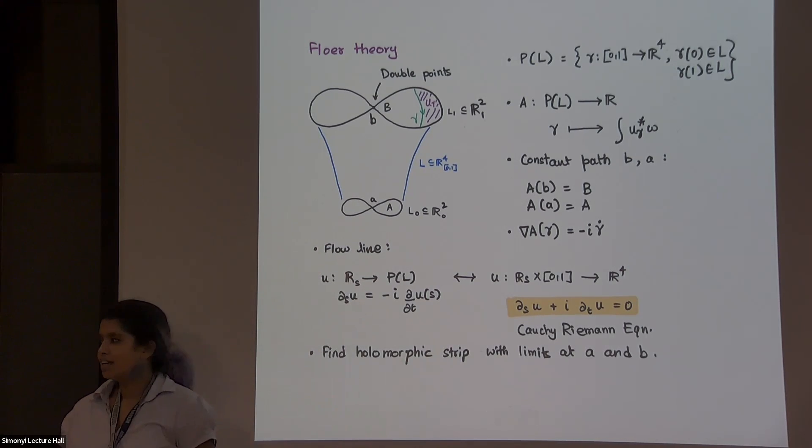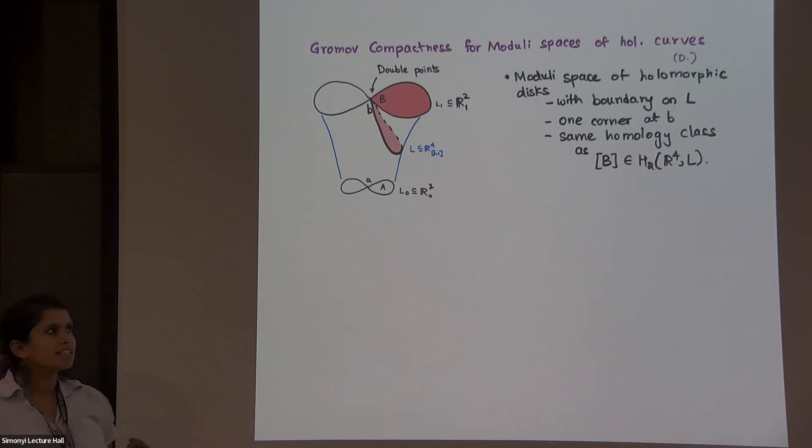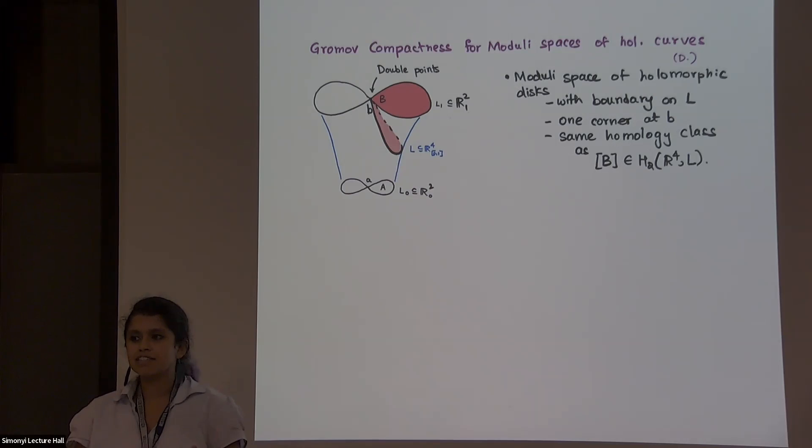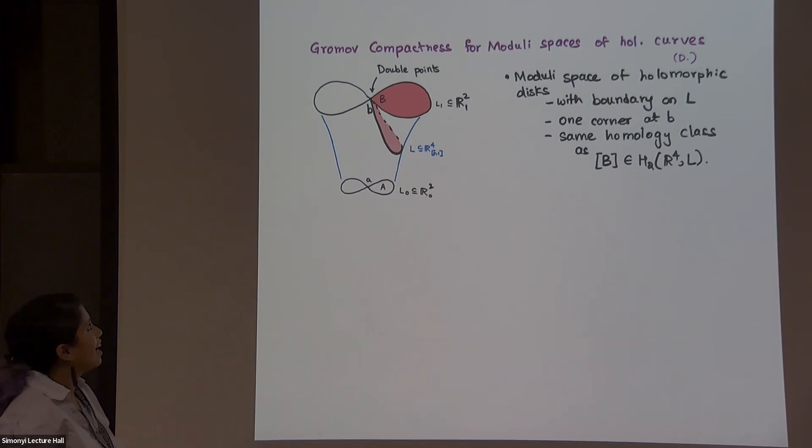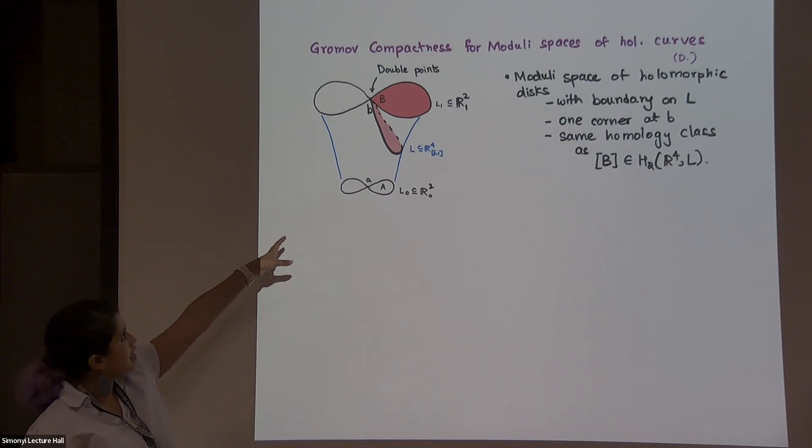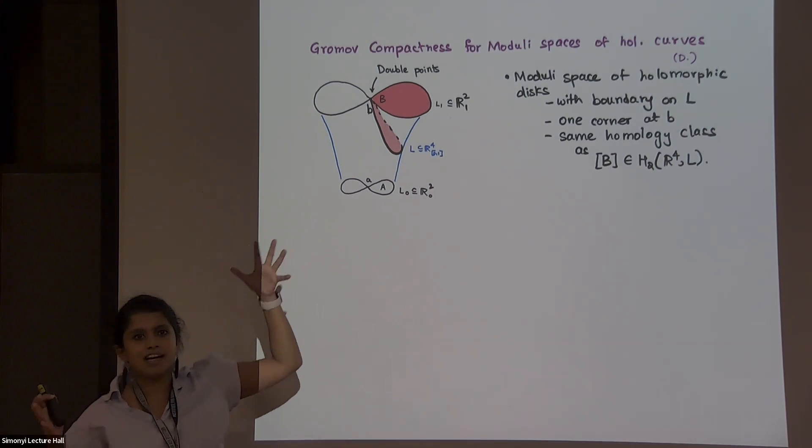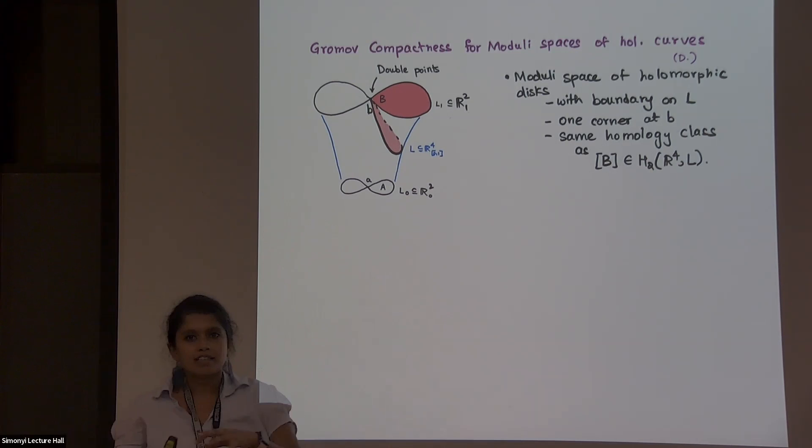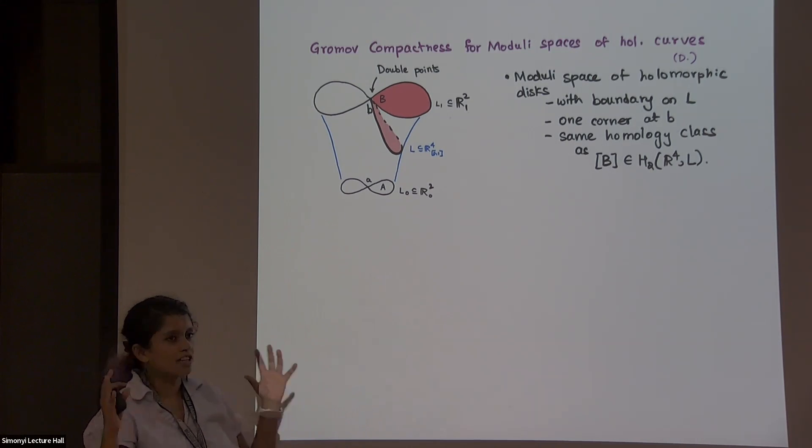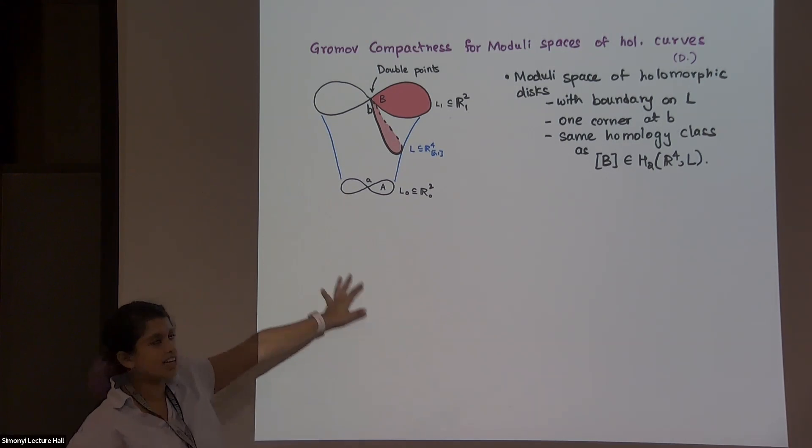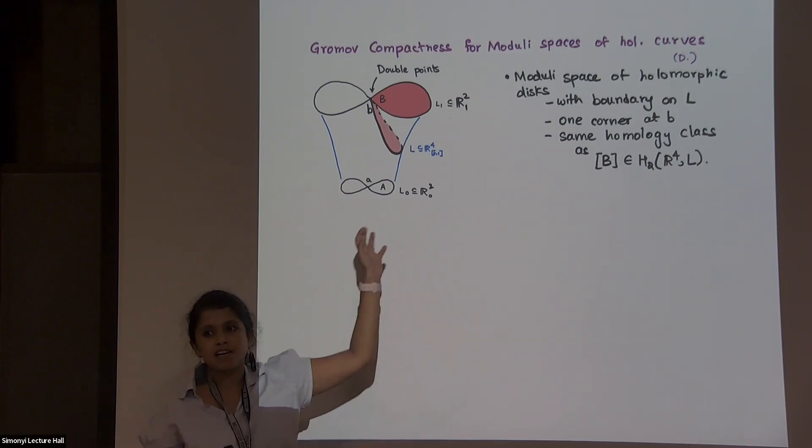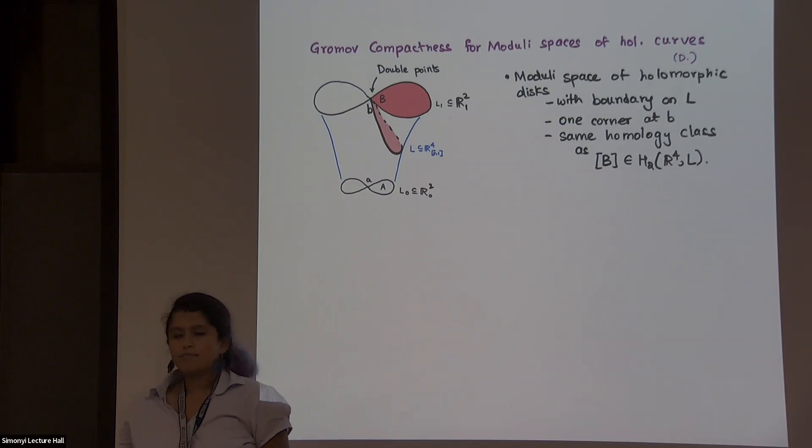And then comes in work of other people. So I guess at the same time that Floer was doing this stuff, Gromov was doing some compactness for holomorphic curves. And you can try adapting those theorems into your conditions, put all your boundary conditions. So that's what I did. Suppose this is the Lagrangian, and there's that pink B that I care about. I'm gonna look at the moduli space. So that means all discs, which are holomorphic and have boundary on this Lagrangian L, they have one corner. So that's like a singularity at the same point B, and they're on the same relative homology class.